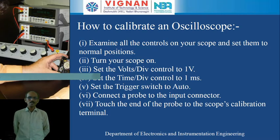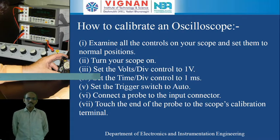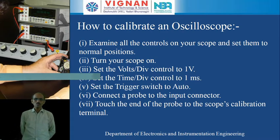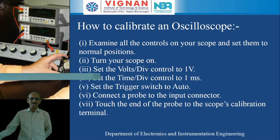Then, turn on the oscilloscope. Next, set the volts per division control knob to 1 volt. This volts per division knob is used for increasing and decreasing the amplitude of the signal. This volts per division knob should be set to 1 volt, and the times per division knob is going to be set to 1 millisecond.